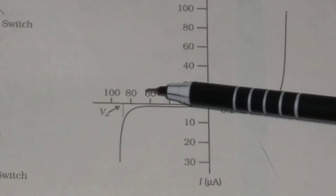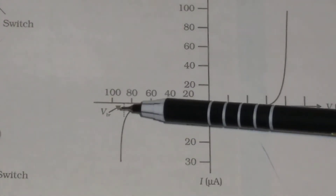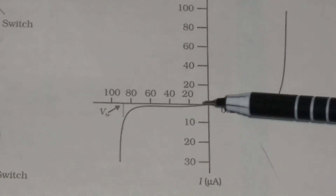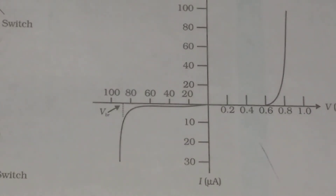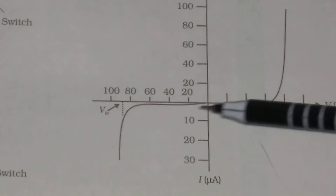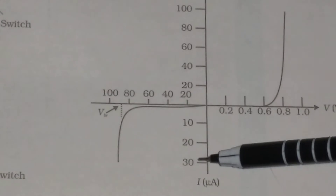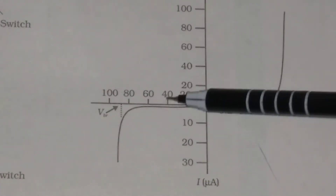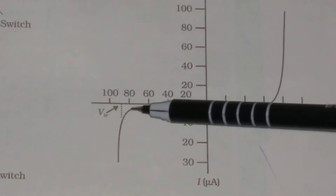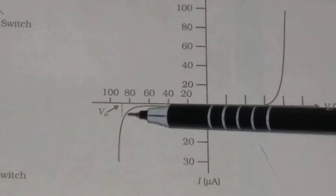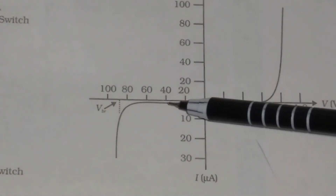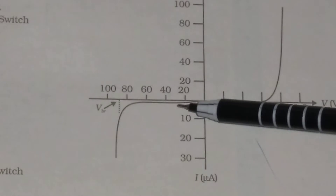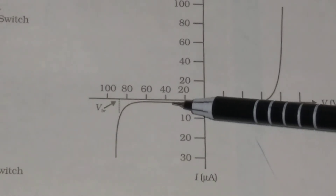If you reverse the voltage — that is, make the voltage negative — you will get the reverse bias VI characteristic. When the diode is reverse biased, this curve shows the VI characteristics of reverse bias. In reverse bias, the current is not very much dependent on the applied voltage.